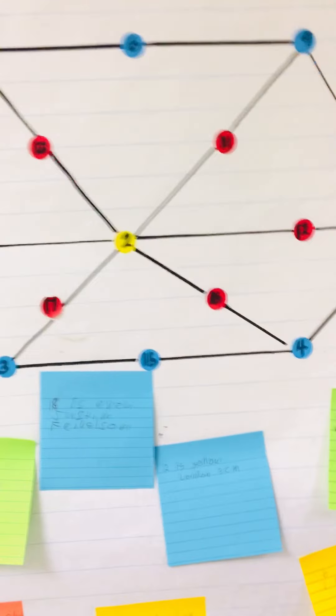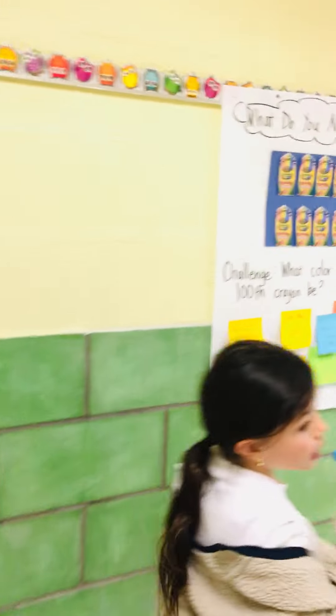And what about this one? It's a hexagon and six triangles that you wrote here.